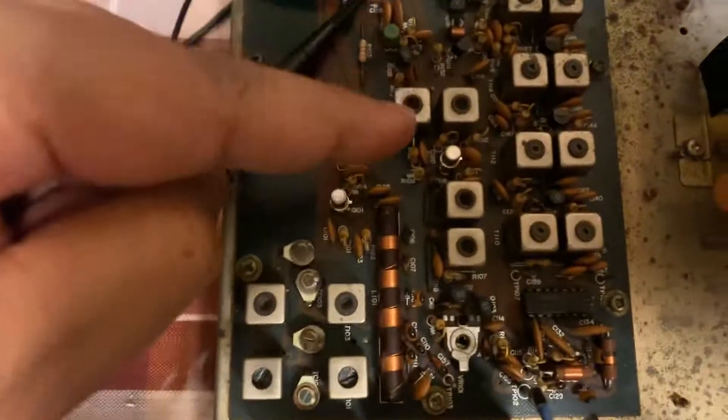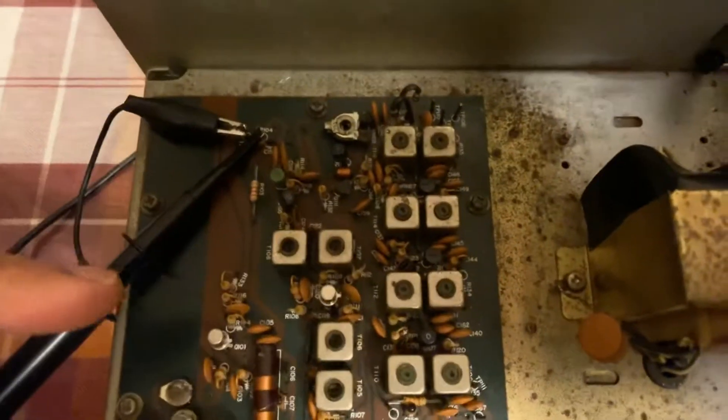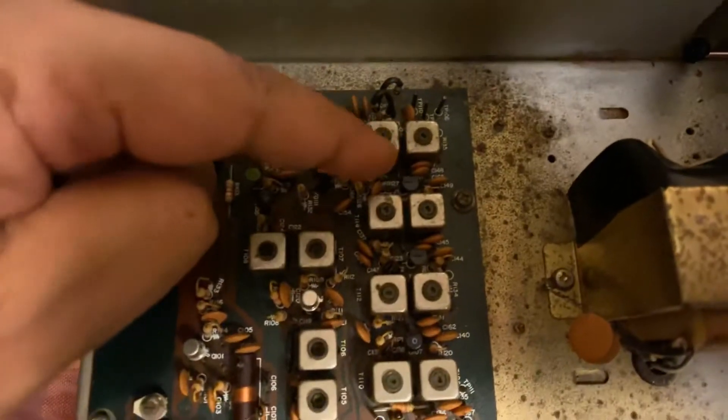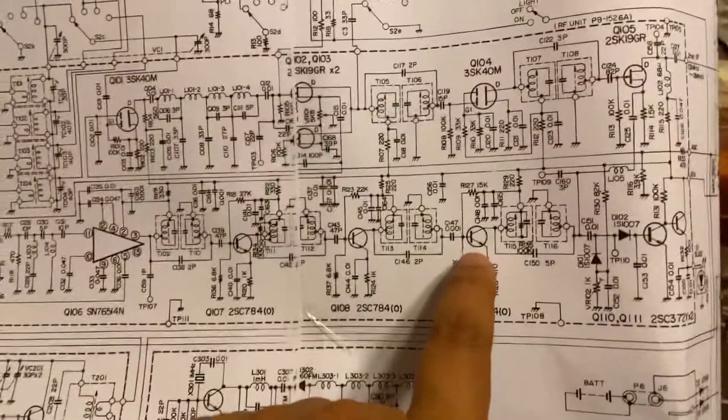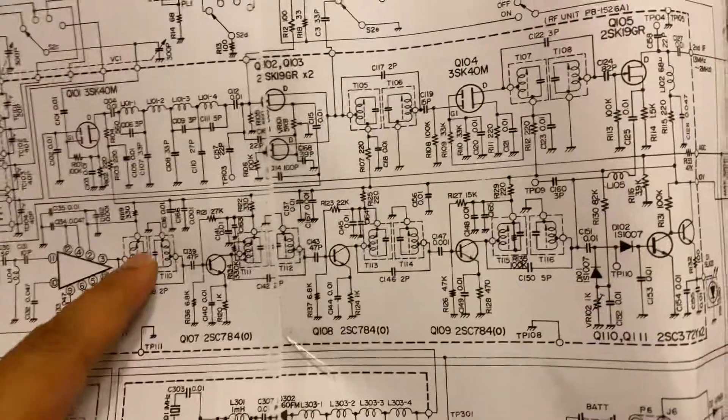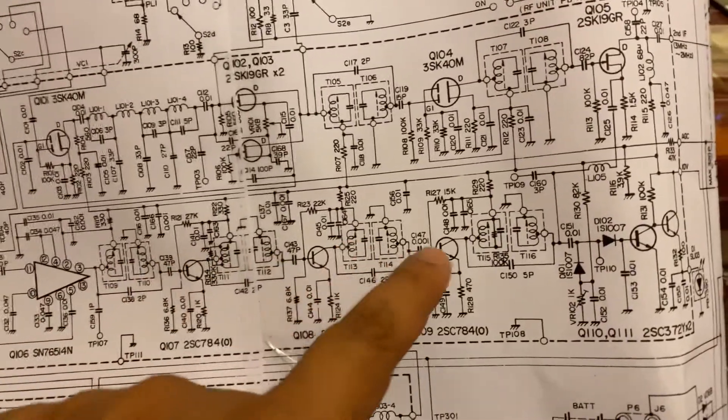And so I started working my way back. So the transistor that was actually faulty is this one right here. That was dead. And that transistor on the schematic is this last driver here. So you've got a 52 MHz signal, amplified, amplified, sort of amplified.